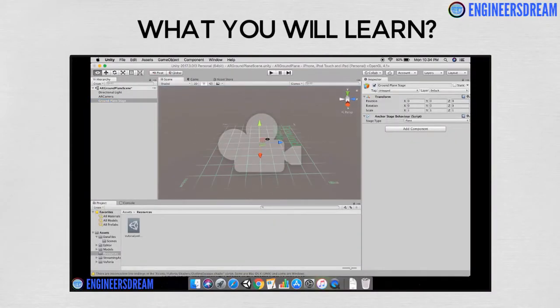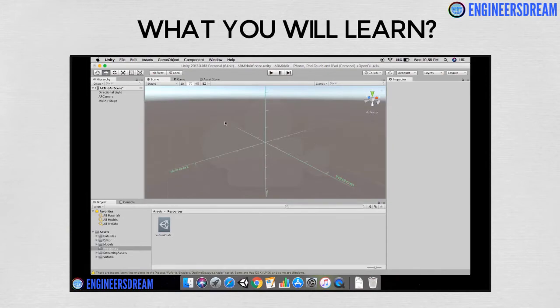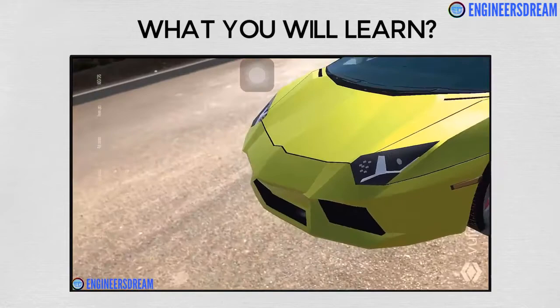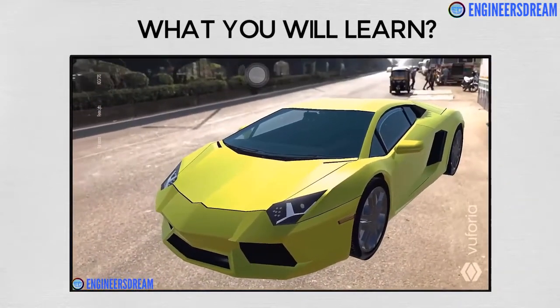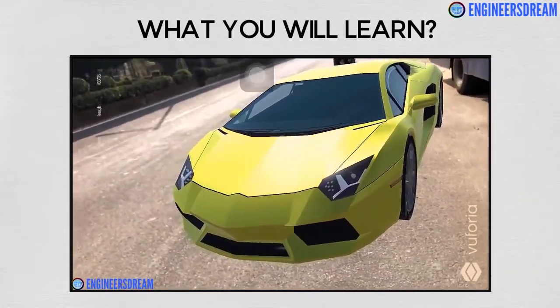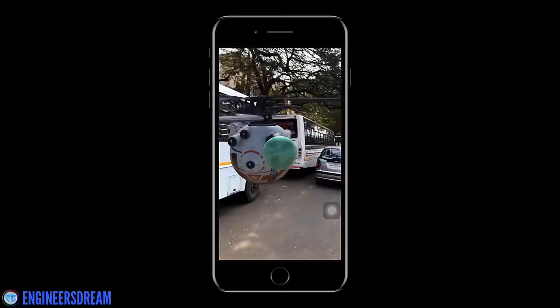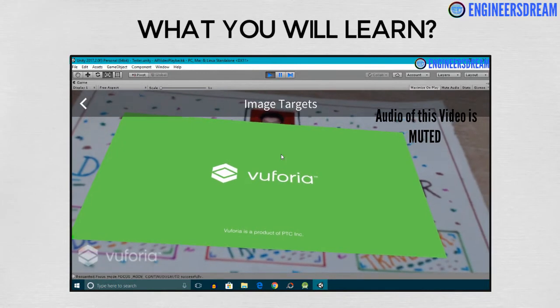Next we will work with Vuforia's markerless technology called ground planes. In this app, we will scan the ground surface and then place a life-size Lamborghini car 3D model in the real world. We will also place drones in the air using Vuforia's mid-air feature.